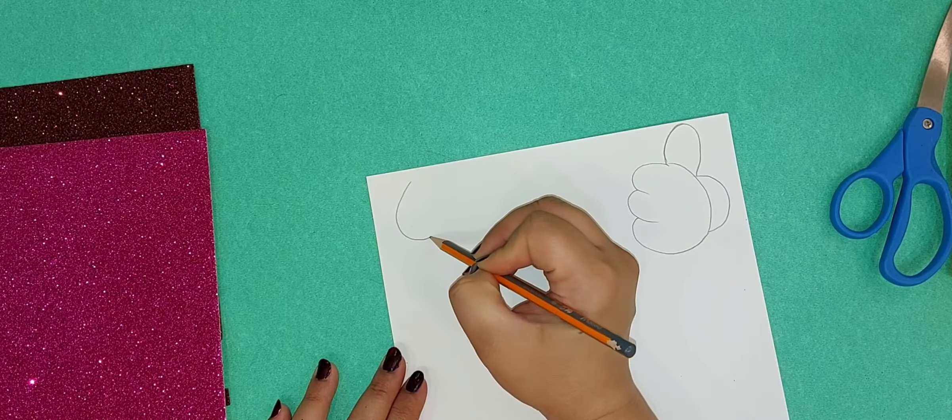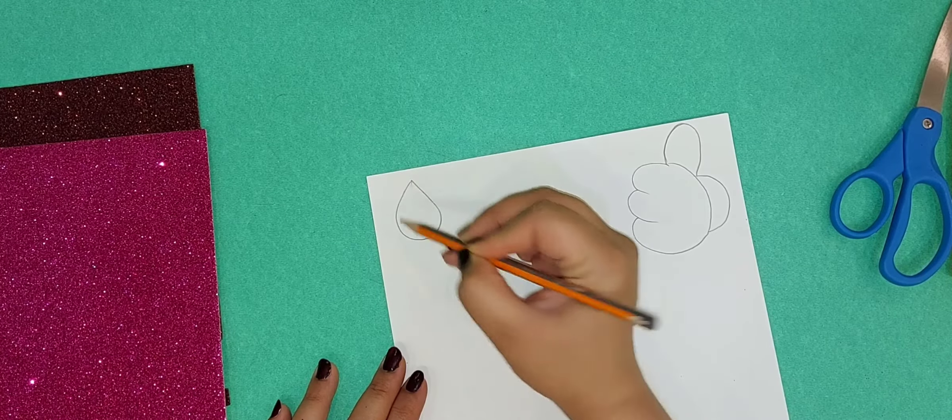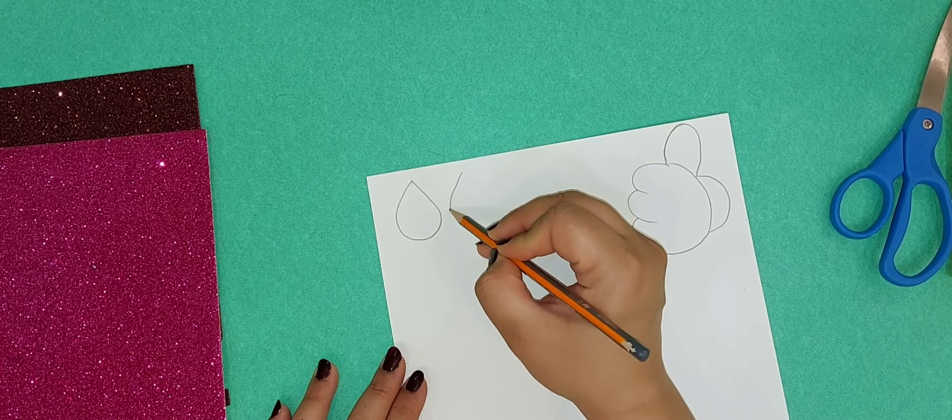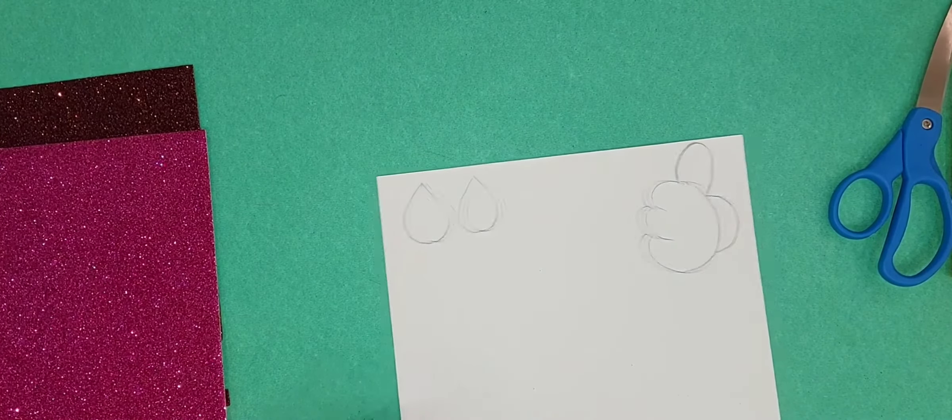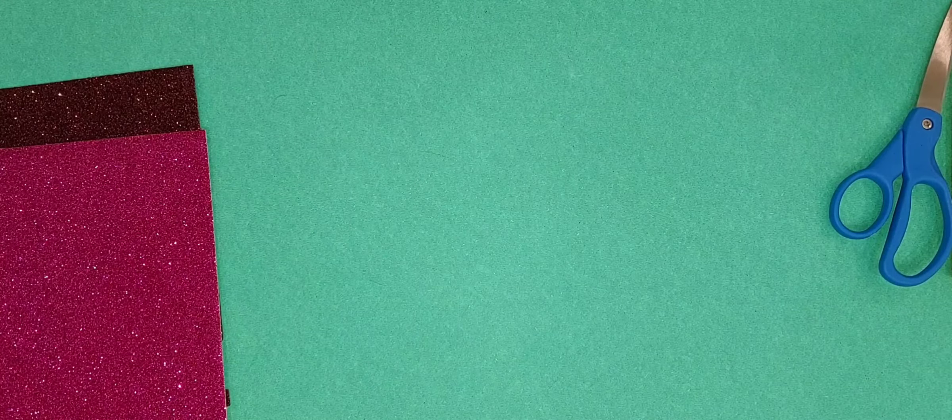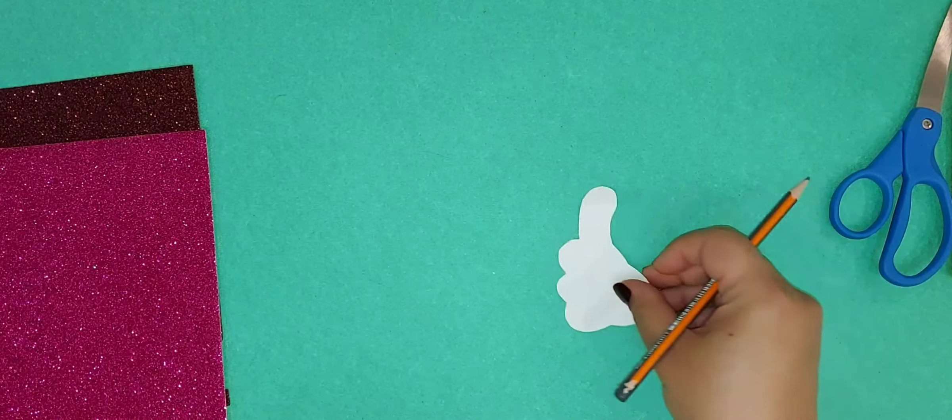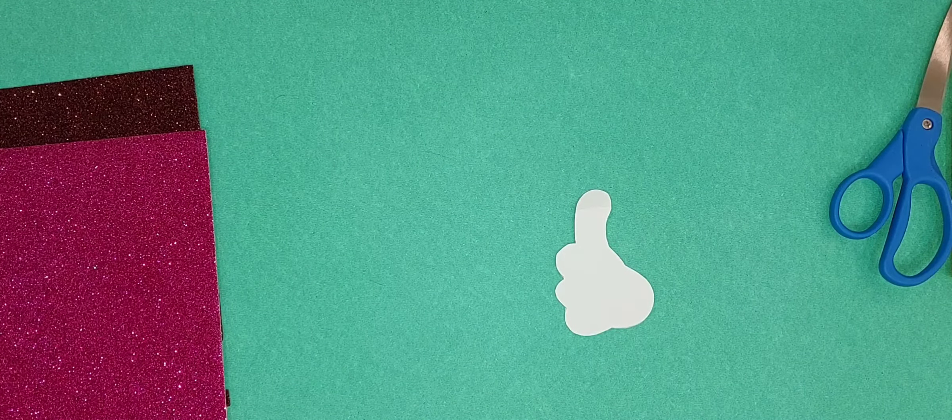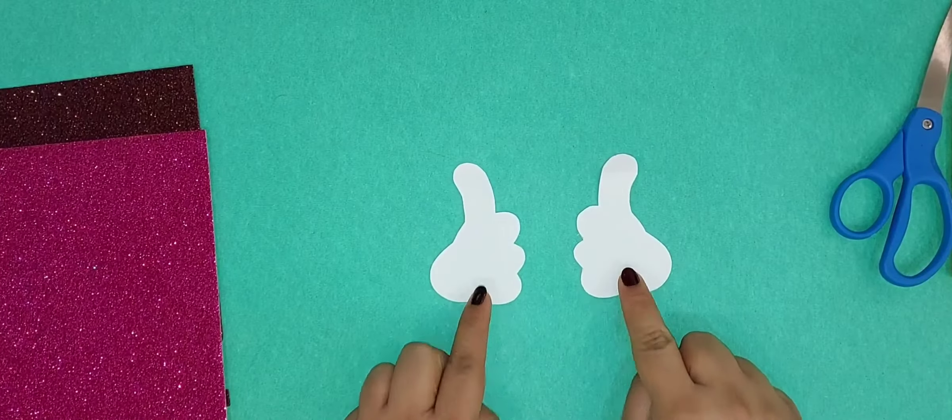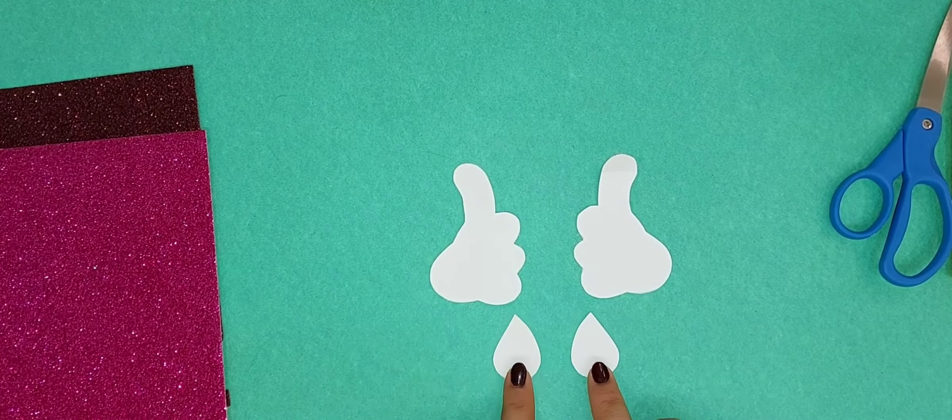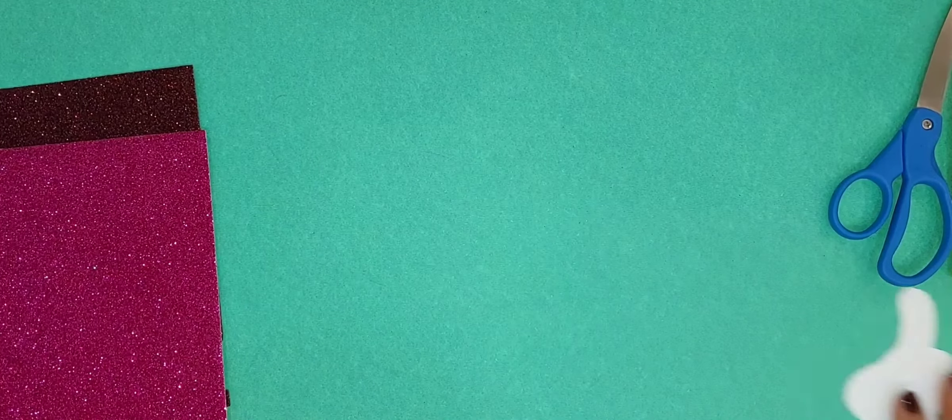Two eyes. For making eyes, I am drawing drop-shaped eyes. So two eyes and two hands I have already cut. One hand and my other hand is also ready, and we have two eyes.